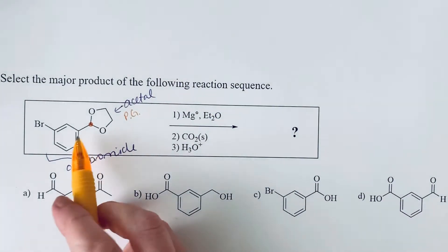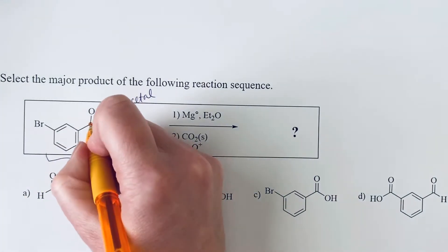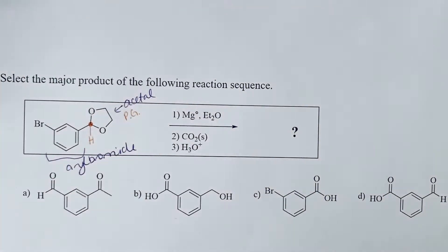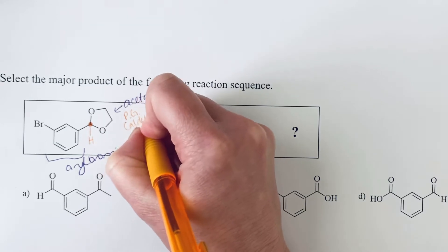And the reason why we know it was an aldehyde is we can see one, two, three bonds to this carbon atom. The fourth bond that is implied would then be a hydrogen. So this is a protected aldehyde in this case.